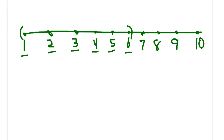In networking, our number line is huge — 4.3 billion numbers in IP version 4, and 103 undecillion numbers in IP version 6. But we're going to break that number line up into ranges that we call networks. These networks are just groups of devices, and each device gets assigned one number in the range, or our network.